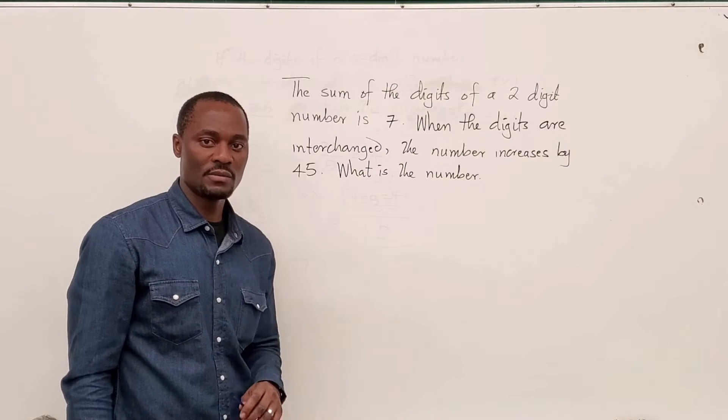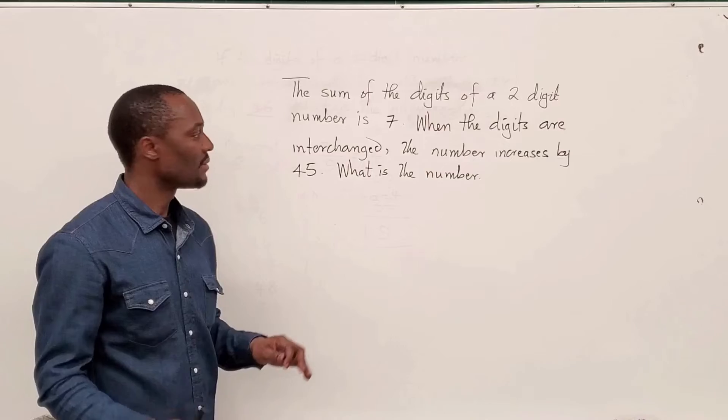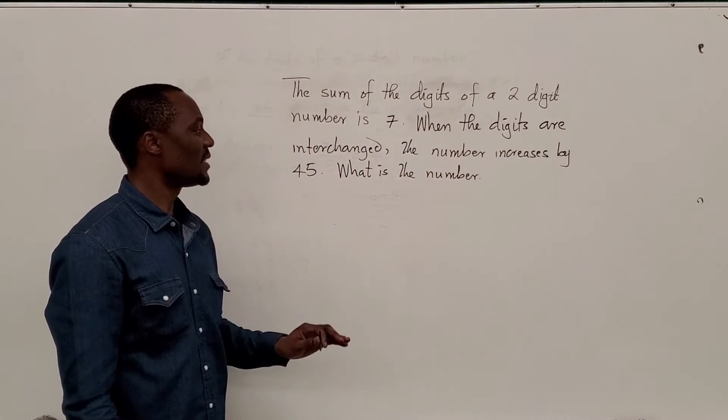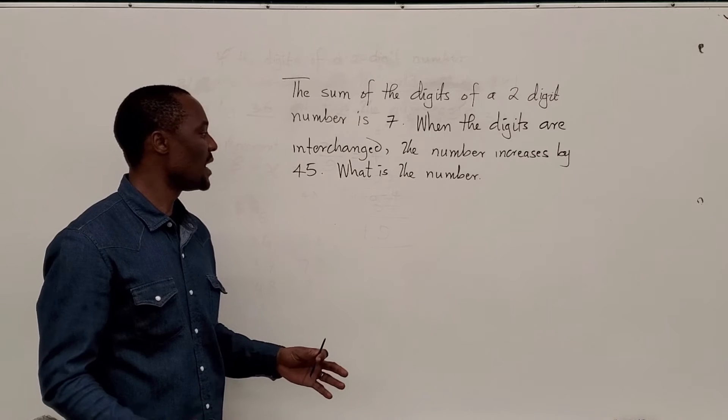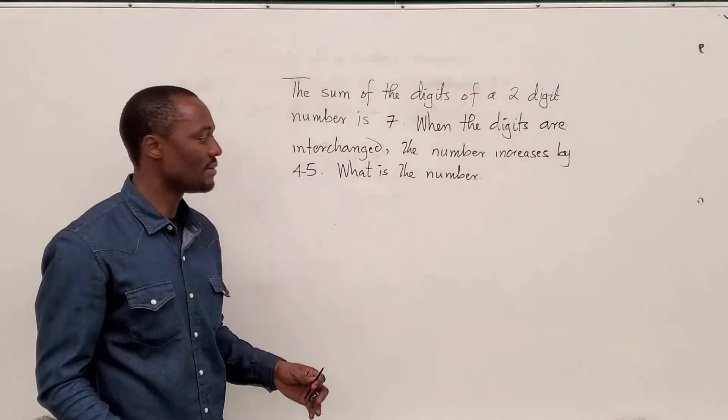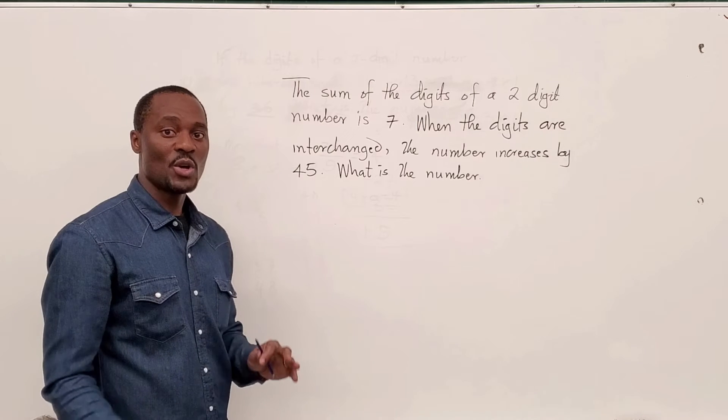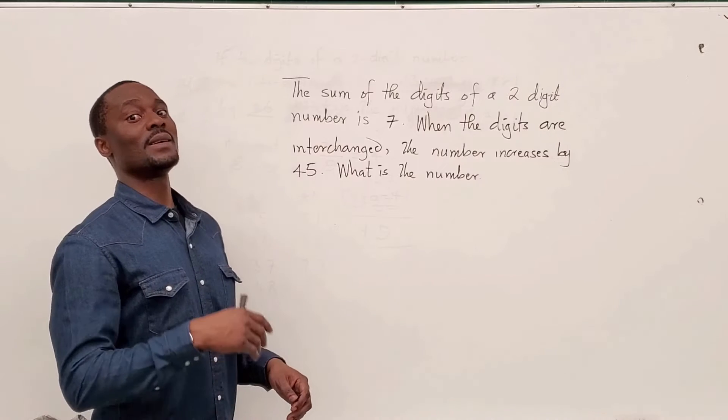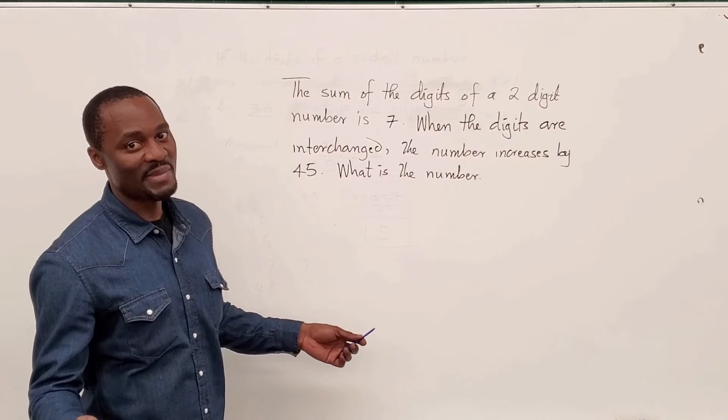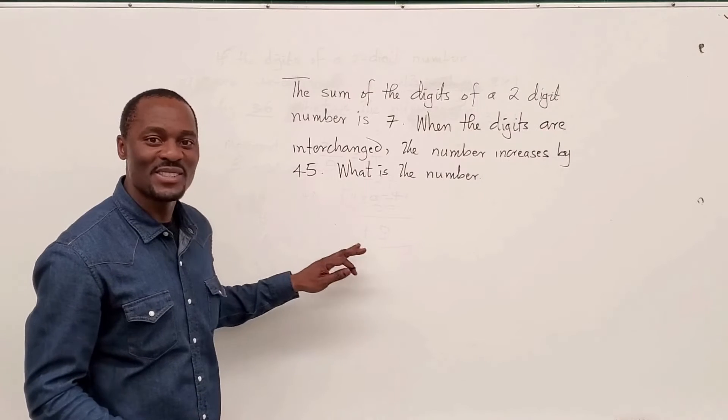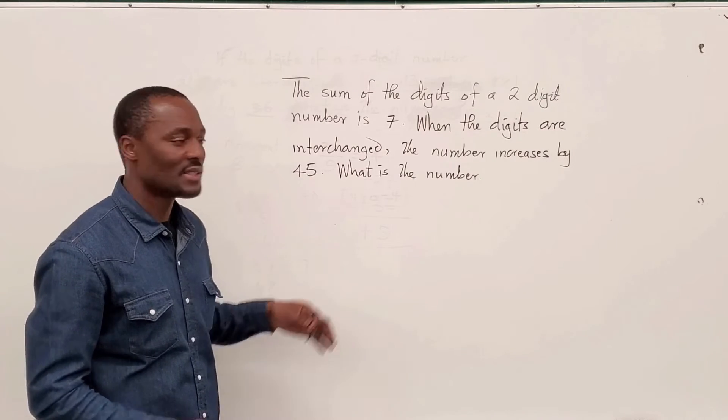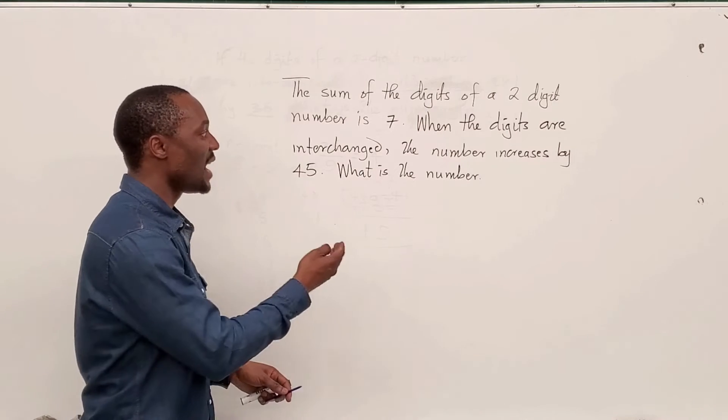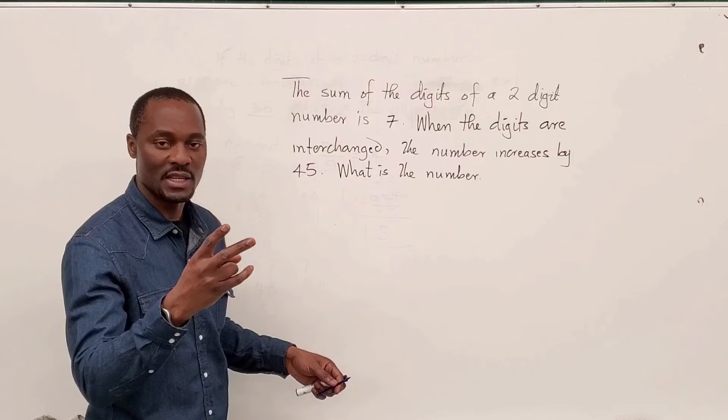So say this is the question that you're faced with. The sum of the digits of a two-digit number is seven. When the digits are interchanged, the number increases by 45. What is the number? Well, I'm going to show you the quick way, and then I'll show you the actual mathematical way. They will always give you the sum of the digits because that's how you narrow down your options. And then they tell you what happened when you switched the digits.